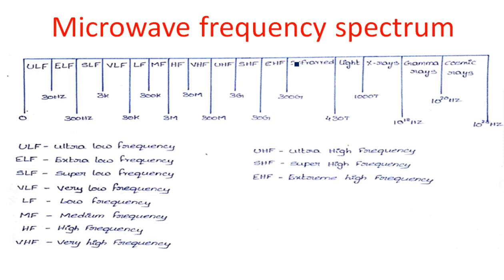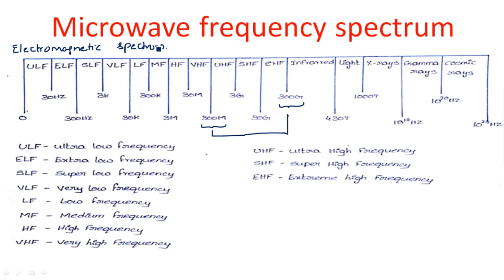Coming to the frequency spectrum of microwave: from where to where is it exactly located? The microwave frequency range is 300 megahertz to 300 gigahertz. All frequencies within this range are microwave; above and below are different types of frequencies. In the entire electromagnetic spectrum — remembering this spectrum is very easy. You should know the names: ultra low frequency, extreme low frequency, super low frequency, very low frequency, low frequency, medium frequency, high frequency, very high frequency, ultra high frequency, super high frequency, and extreme high frequency.